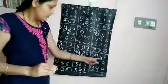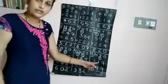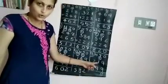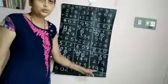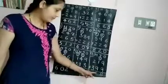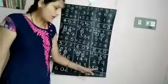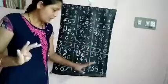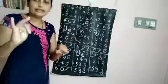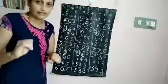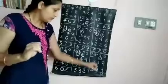Now add the tens. 1 plus 1 is 2. 2 plus 9. 2 after: 3, 4, 5, 6, 7, 8, 9, 10, 11. 2 plus 9 is 11.